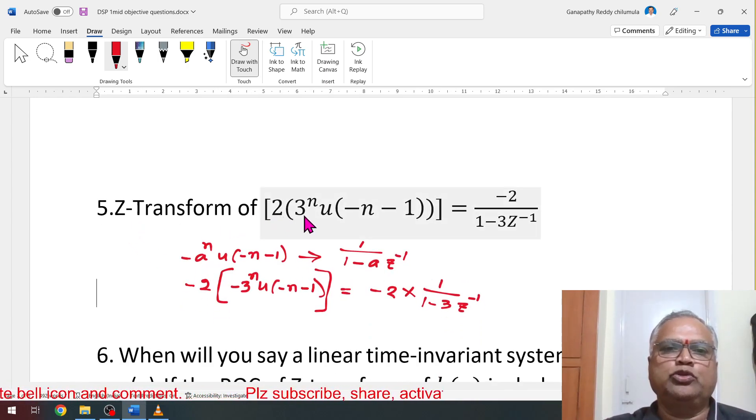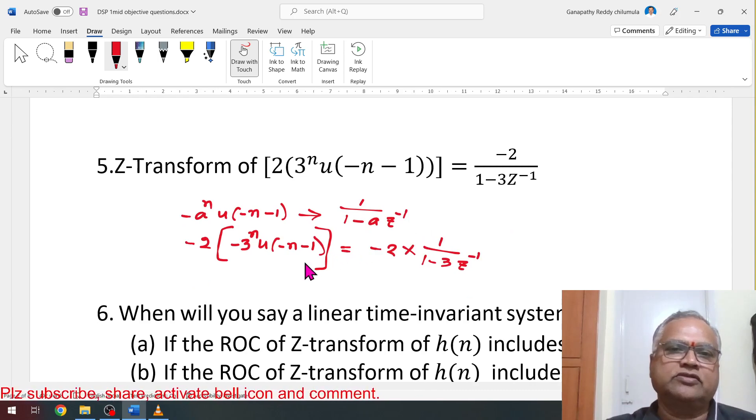What is remaining is this. Now, replace Z tends to 1, Z^(-1) also 1, simplify you will get 1. Z tends to 1 minus Z^(-1), Z tends to 1 minus Z^(-1) is, answer I have given, but it is like a fill in the blanks. We know this formula: (-a)^n u(-n-1) is 1/(1-aZ^(-1)). We know this formula, but here plus 2 given, so same thing I modified: minus 2, minus 3^n, minus minus will cancel. So this term looks like this: -2 × 1/(1-3Z^(-1)). Now you get this answer, straightforward.